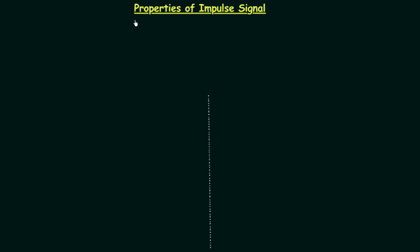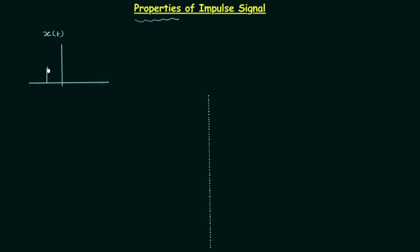In this lecture I will explain different properties of impulse signal, but before starting the properties we will first revise the unit impulse signal. To understand unit impulse signal, I will take one signal x(t), and this signal x(t) is having unit area. Now I will plot the waveform of signal x(t). Signal x(t) is a finite duration signal having finite value between minus epsilon by 2 to epsilon by 2, and the finite value is 1 by epsilon.